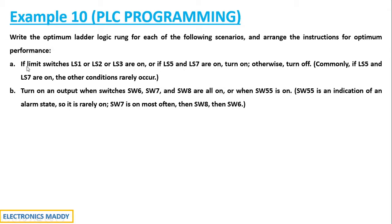Let us go through problem A and try to solve that. Problem A states: if limit switches LS1 or LS2 or LS3 are on, or if LS5 and LS7 are on, turn on otherwise turn off. They are basically trying to say there is a system like a light load and you have these switches. If all these conditions are satisfied, it should turn on otherwise turn off.